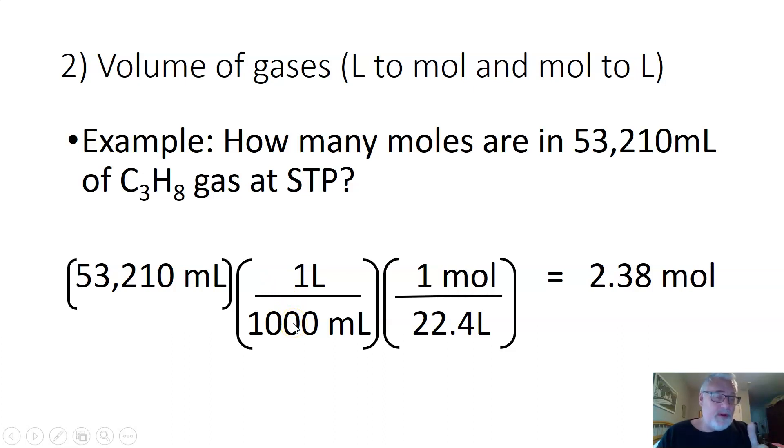A lot of people will make this mistake of doing this in their calculator. They'll take 53,000 divided by a thousand and then times 22.4. Well your calculator as soon as you go times, it thinks it's on the top. And unless you use a parenthesis key it's going to mess up the order of operations there.